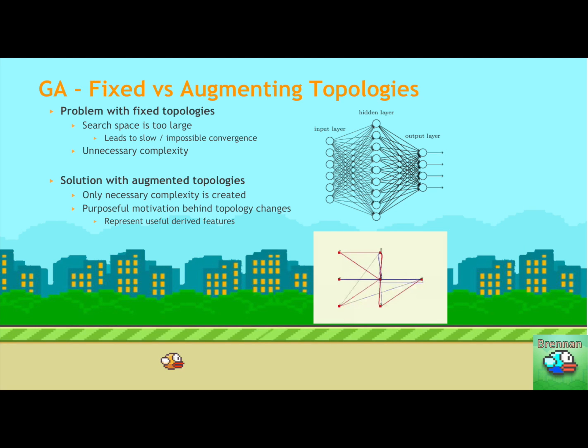And so the whole idea for fixed versus augmenting topologies is that the problem with fixed topologies, as you can see from the diagram on the right, is that if we just have a single hidden layer, it blows up how many connections we have. And this leads to a really large search space, because it takes so much time to find the optimal weights just by initializing them randomly, that it leads to slower, potentially impossible convergence. And secondly, it's just unnecessary complexity. So the solution to solve uniform pipes, for example, does not require all those connections. It doesn't need that complexity.